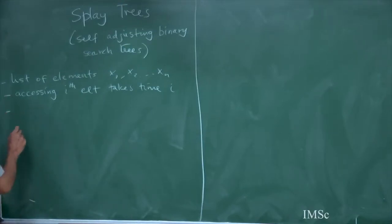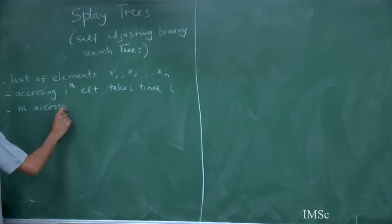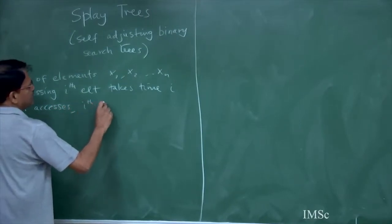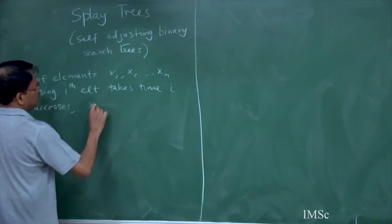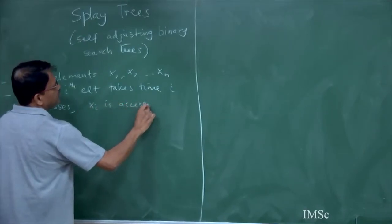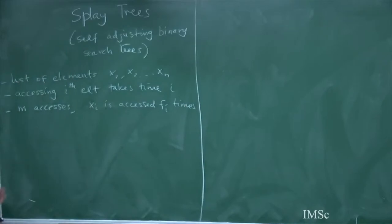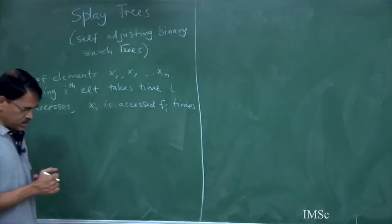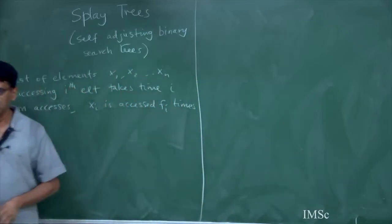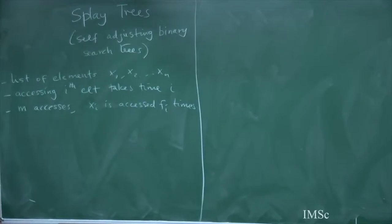I have a bunch of accesses — I want to do m accesses where xi is accessed fi times. Somehow I know beforehand that I want to maintain this list, and I know how many times xi is going to be accessed. I give you some preprocessing time to organize the list. How would you organize it so that the overall access time is minimized?